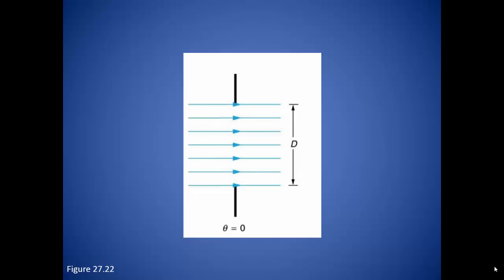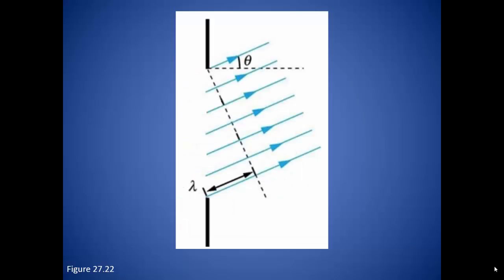If these rays of light interfere constructively, then there will be a bright fringe formed on the screen. The brightest fringe occurs directly at the center, where the rays travel horizontally with respect to the incoming rays, producing quite a bit of constructive interference. However, because of the wavelets moving out in front, some of the rays will bend and travel at some angle to the horizontal.